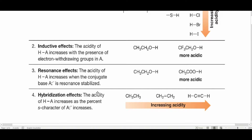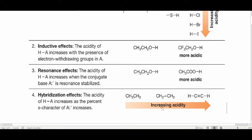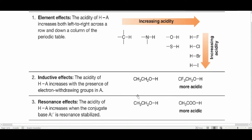Factor number four is the hybridization effect. I've made a video about predicting hybridization quickly using a simple rule — please watch that first. Hybridization clearly affects acid strength: SP hybridized compounds are more acidic than SP2, and SP2 are more acidic than SP3. Simply put, alkanes are least acidic and alkynes are most acidic. Higher S-character means higher acidity — alkynes have 50% S-character, while alkenes have SP2 and alkanes have SP3 hybridization.